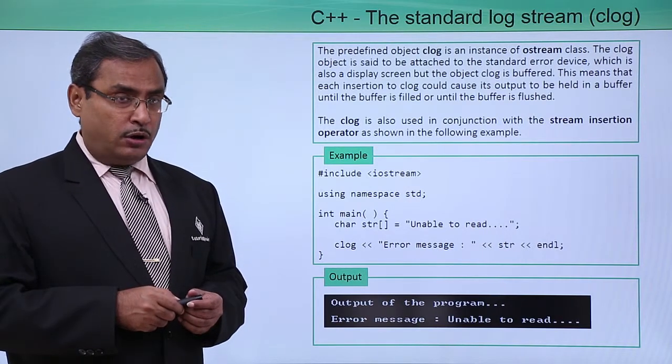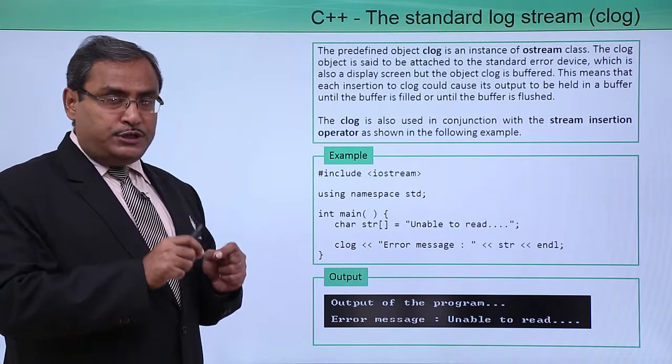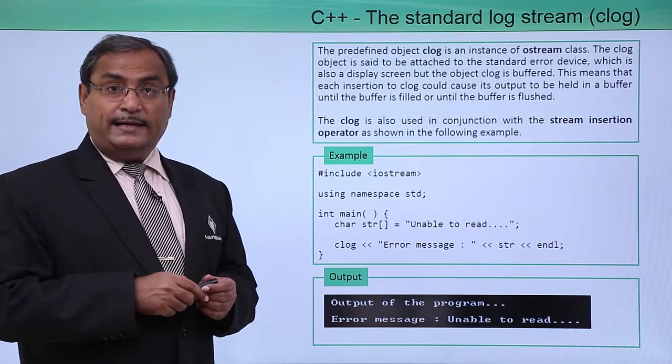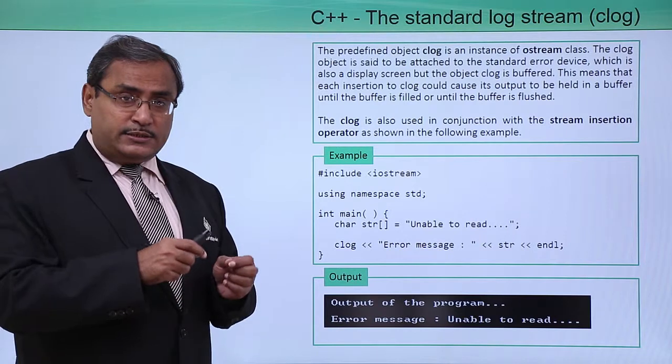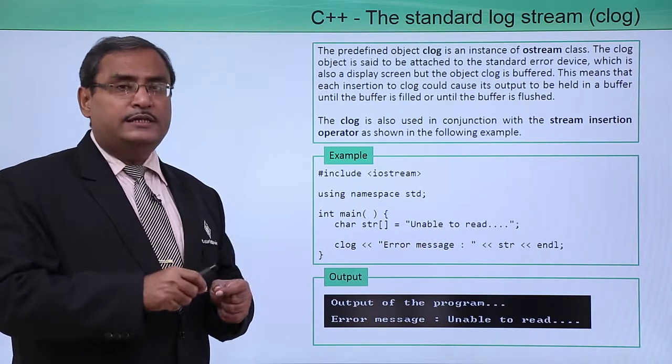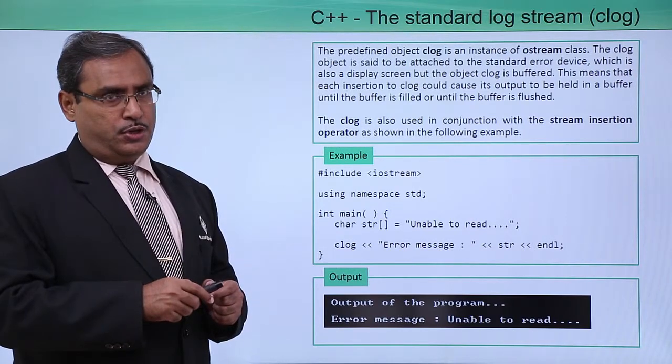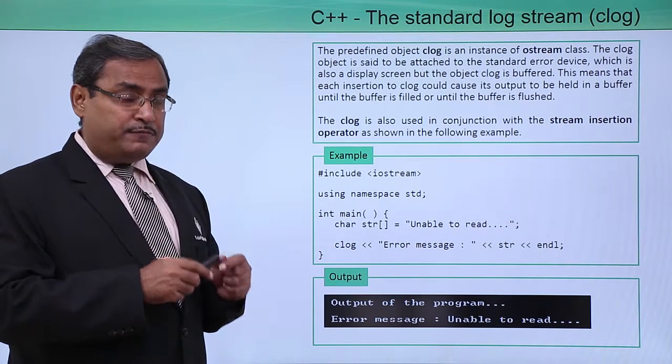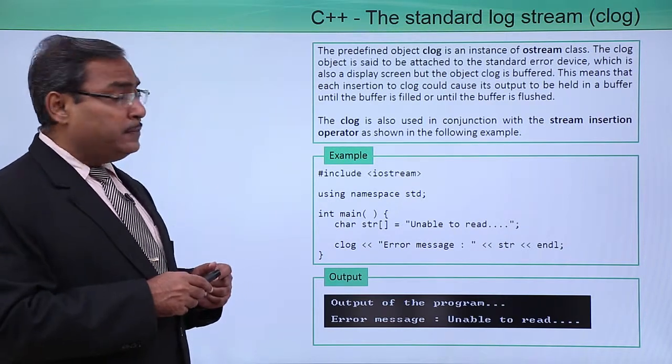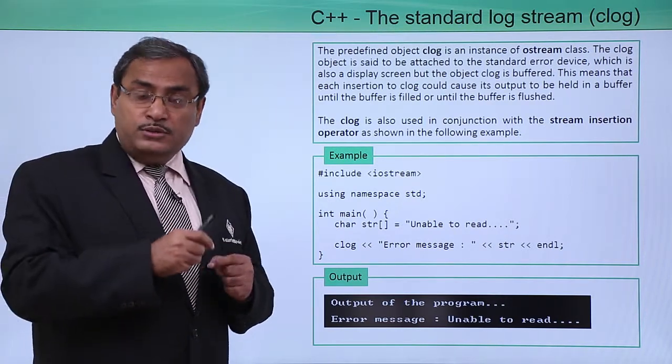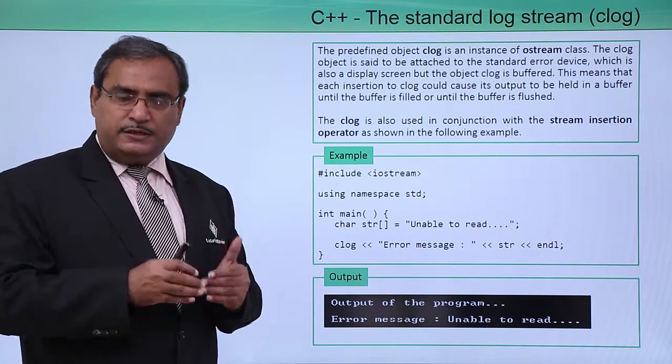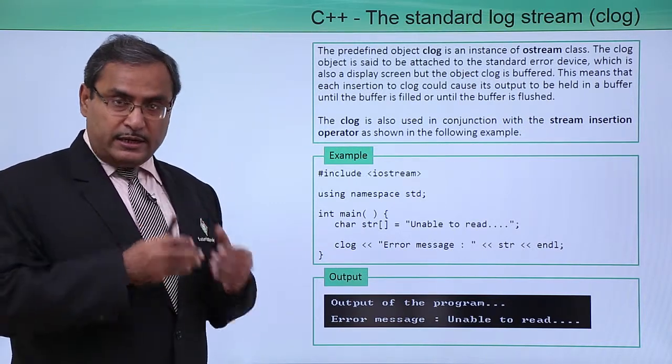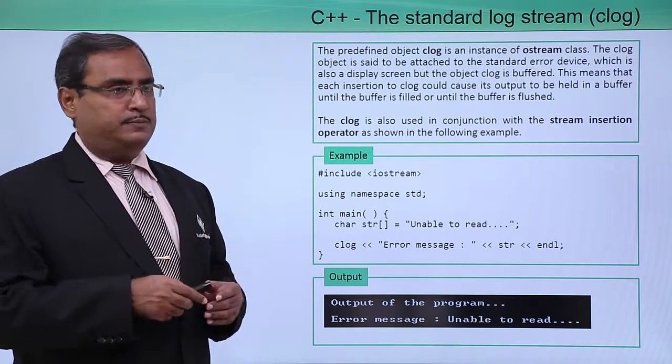That means in case of clog, it is an inbuilt object of the class ostream, and this clog is buffered output. As clog is buffered output, whenever we use clog, all the output will get buffered until you clear this buffer or flush this buffer.